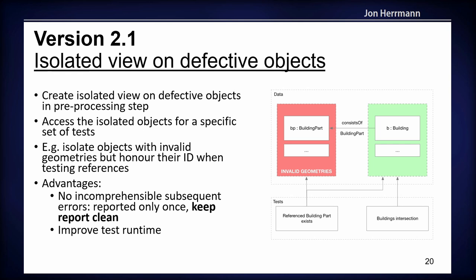Another new concept is the isolated view on defective objects. This lets you filter out objects that have defects and would lead to many errors in the report — the idea is to report the error only once. For example, if a building has building parts whose geometry is not valid because multiple polygons are not closed, you do not need to execute geometric tests on those. You report this error once, but you are still capable of doing tests like checking references by including both views. The advantage is that you keep the report clean and also improve test runtime.